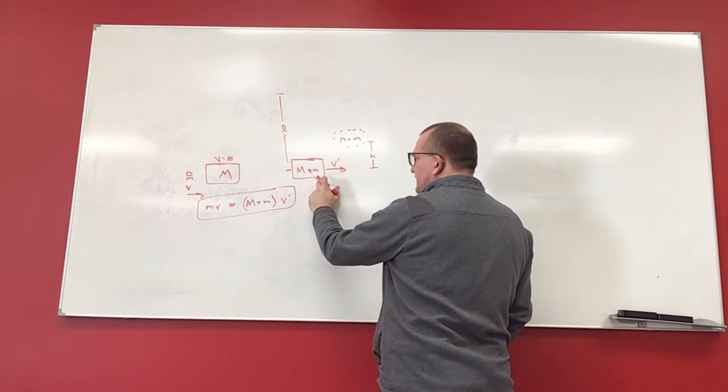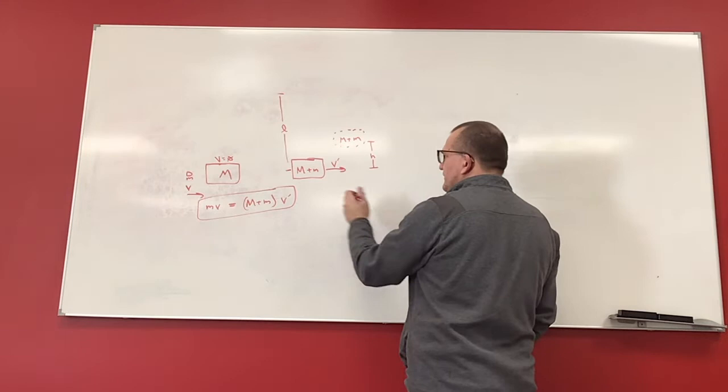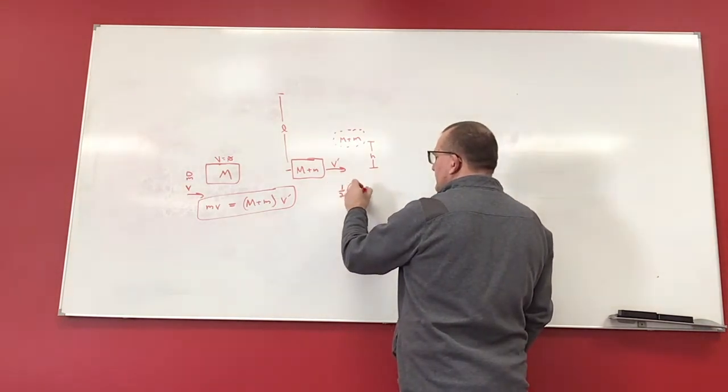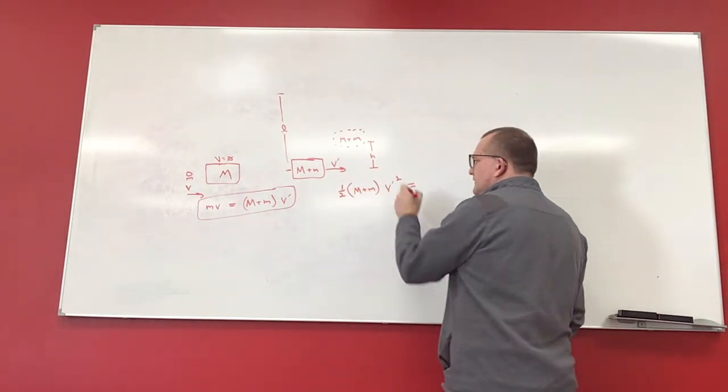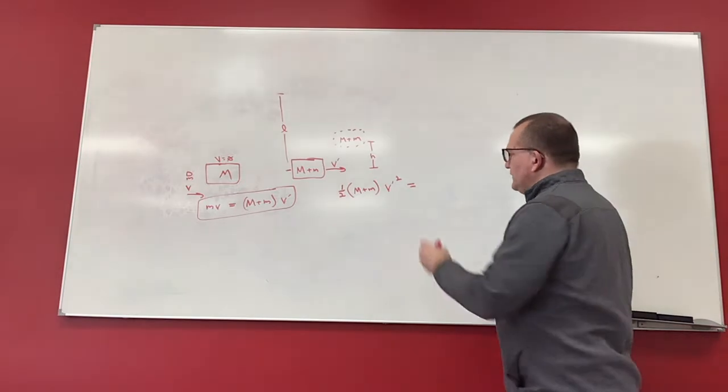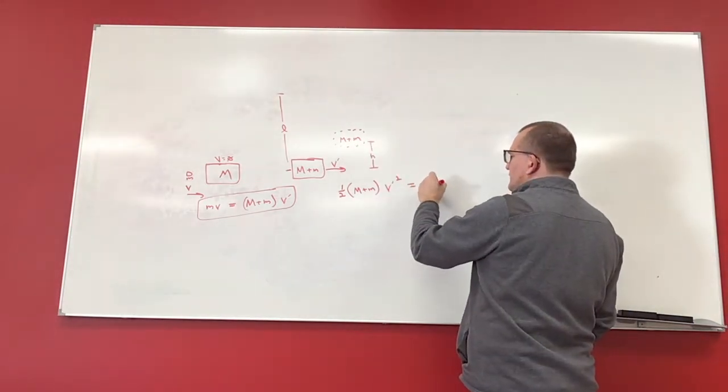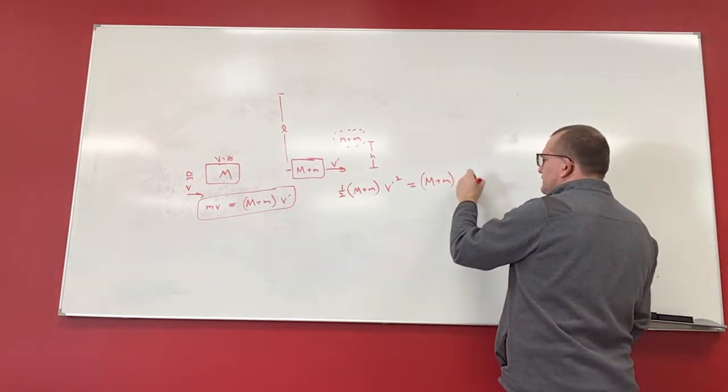So I have kinetic energy here. At the very top, I have just potential energy. So essentially, I'm going to say that I have one-half (m + M) V prime squared is equal to my mass, which is (m + M) times G times H.